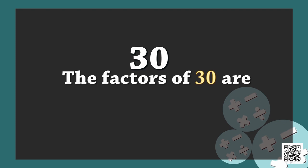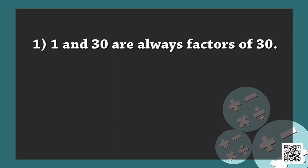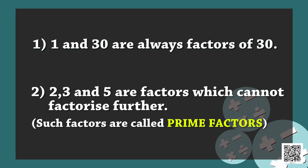For example, let us take the number 30. The factors of 30 are 1, 2, 3, 5, 6, 10, 15, and 30. Observe these factors: 1 and 30 are always factors of 30, while 2, 3, and 5 are factors which cannot be factorized further.